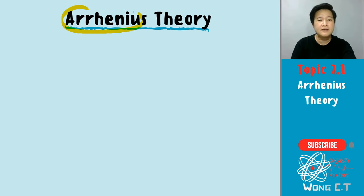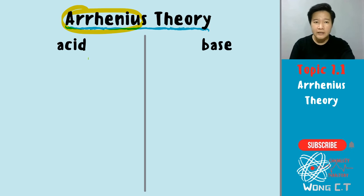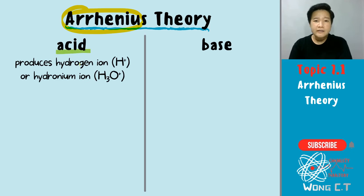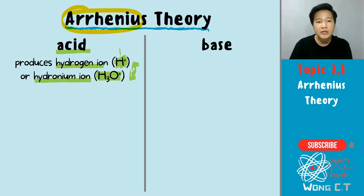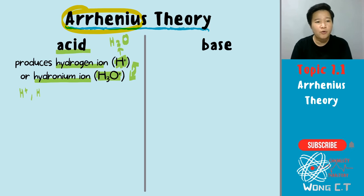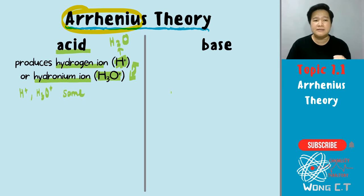Let's take a deep look into Arrhenius theory. In Arrhenius theory, for acid, the theory says that an acid is a species that will produce hydrogen ion — your H+, or your hydronium ion, H3O+. Bear in mind, H+ and H3O+ actually represent the same thing. It's just that when your H+ is in water, it becomes H3O+. So H+ and H3O+ represent the same thing, and that is how Arrhenius identifies an acid.